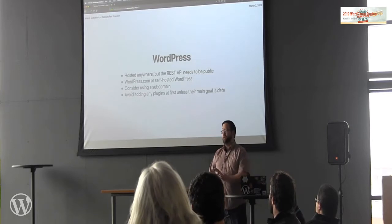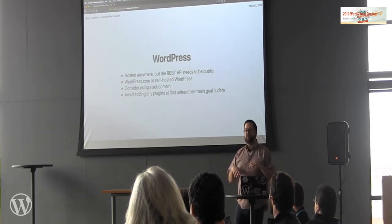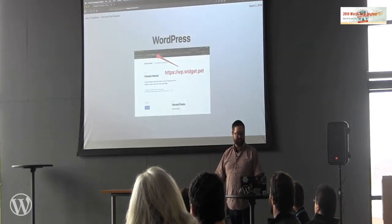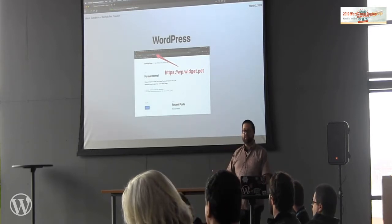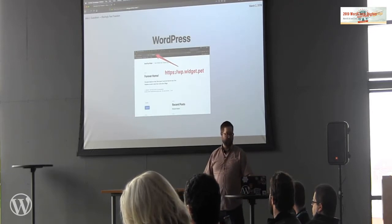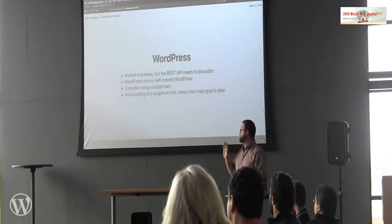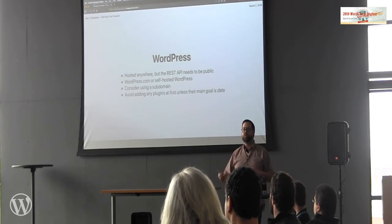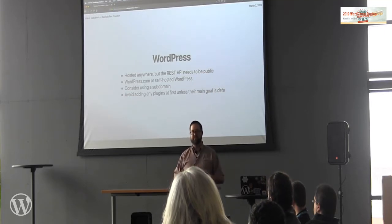Step one: install WordPress. You can do this on your local machine, but for simplicity just throw it up on a server. I like putting it on a subdomain — my example is wp.widget.pet. Widget is my dog; she loves WordPress too. The site is just running Twenty Nineteen with some blog posts and pages — nothing crazy. I'm just using it for data and talking to it through the REST API. You can host this WordPress site anywhere. I would avoid using plugins until you get rolling, particularly if they're not about storing data. Advanced Custom Fields is useful; a form builder less so since we're not using the WordPress front end.